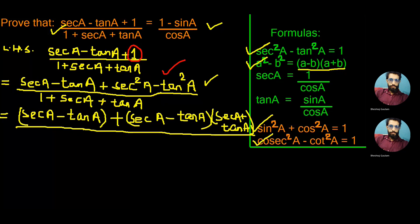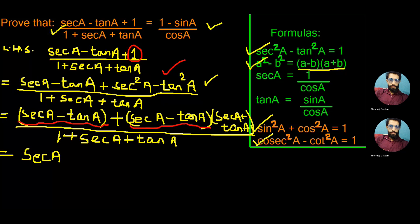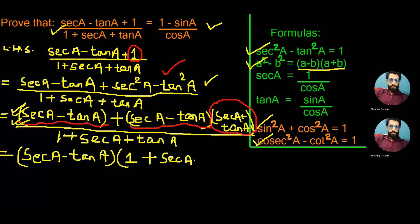We won't make any changes in the denominator, so we write the same: 1 plus sec a plus tan a. Now carefully observing the numerator, we see sec a minus tan a is common in both parts. So we take that as a common factor. Sec a minus tan a as common, and in the second bracket the remaining from the first part is only 1, plus from the second bracket there remains sec a plus tan a.